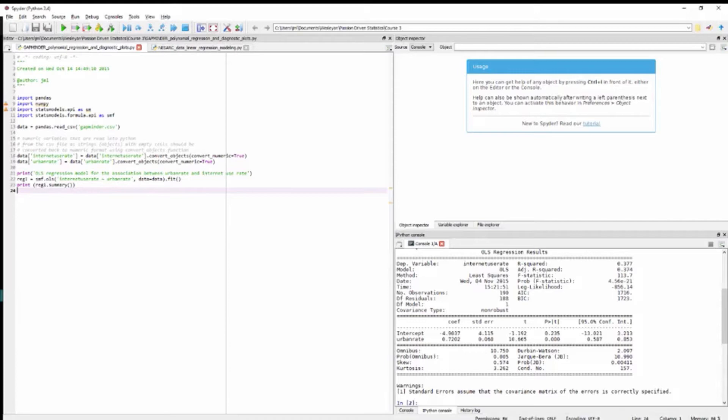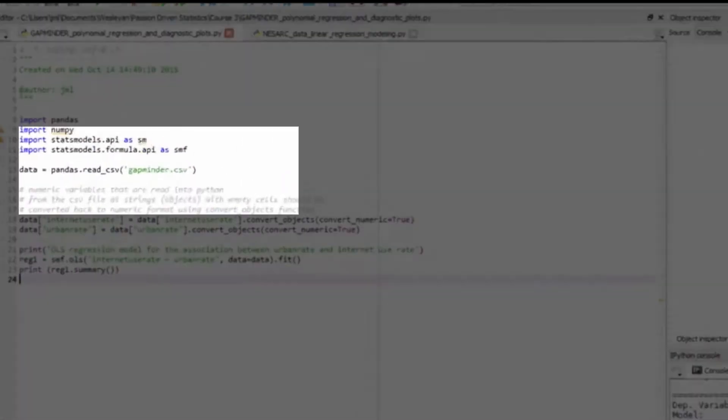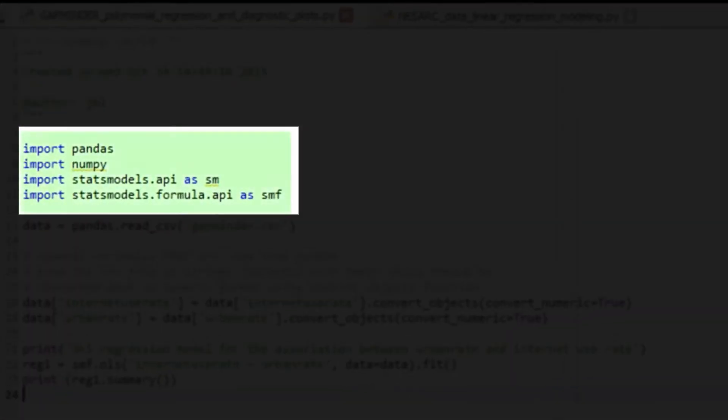For this sample research question from the Gapminder dataset, we first import the libraries we will need: NumPy, Pandas, StatsModels API as sm, and the StatsModels Formula API as smf. Note that we are giving the StatsModels API library the abbreviated name sm, and the StatsModels Formula API library the abbreviated name smf. These are the names that we will use to refer to these libraries later on in the Python script.